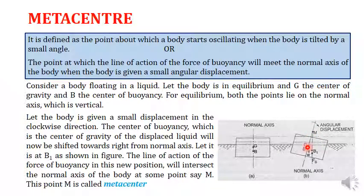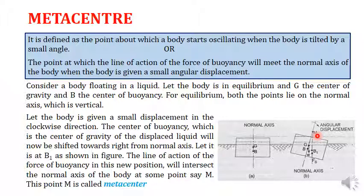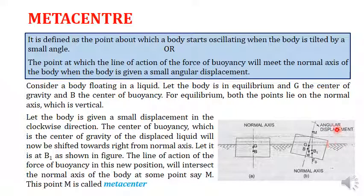This intersection point M is where the new tilted buoyancy force axis meets the original normal axis of the stable upright case. The distance GM is called the metacentric height, and M is the metacenter of the body. The determination of metacenter is very important for the stability of immersed bodies in fluid.